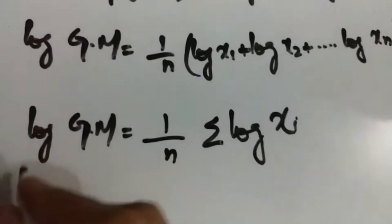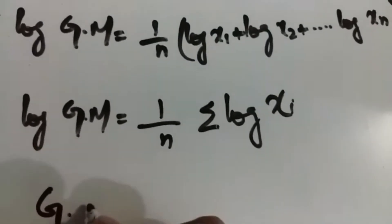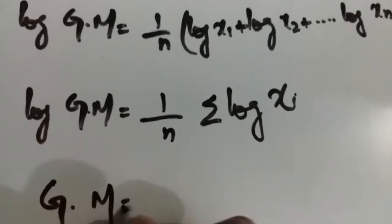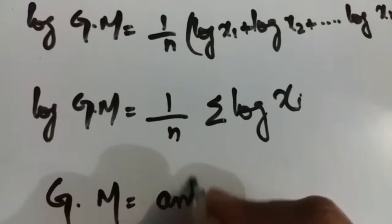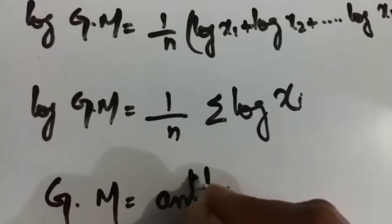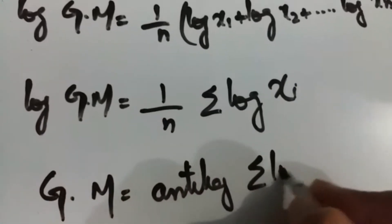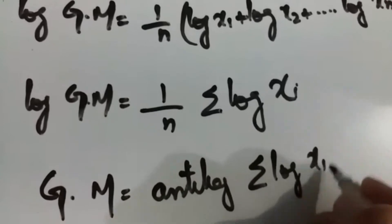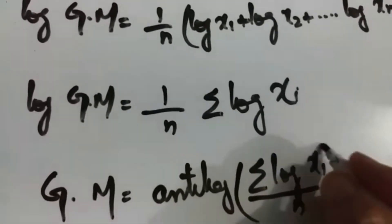Taking the log of geometric mean to the other side gives antilog. So geometric mean equals antilog of summation log xᵢ upon n, which is verified.